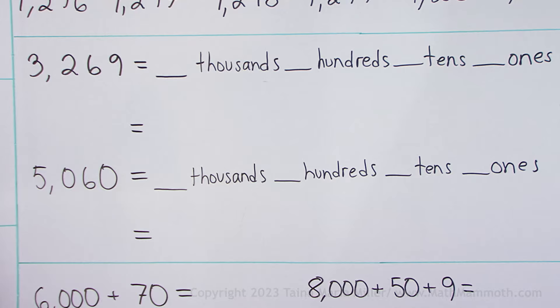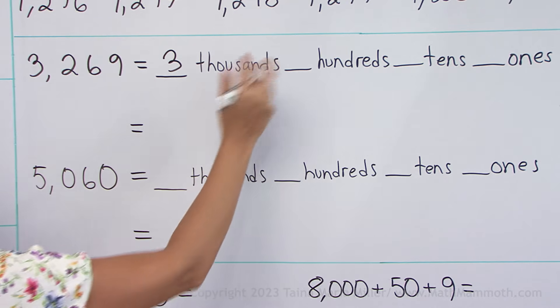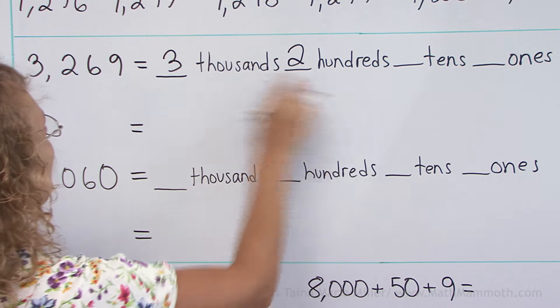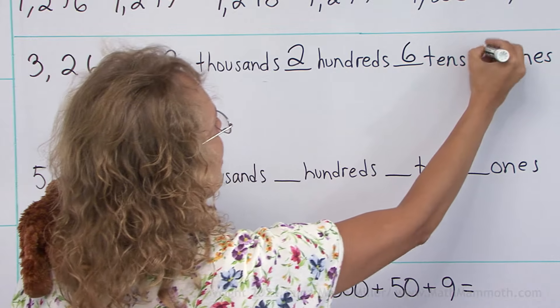This number, can you read it? Three thousand two hundred sixty-nine. So it has three thousands and two hundreds and six tens and nine ones.